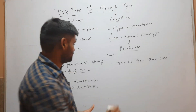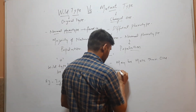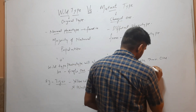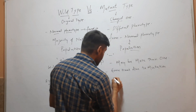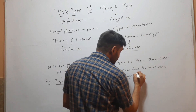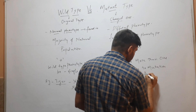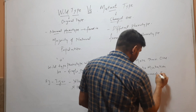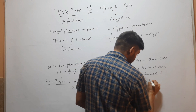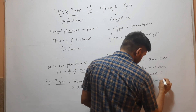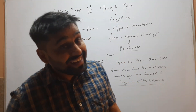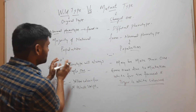But sometimes, due to mutation, white fur is formed and the tiger is white colored. This white color is the changed one — it is changed from the original one. The yellow fur with black strips is the original, found in the majority of the population.